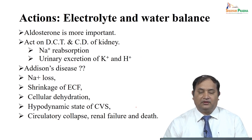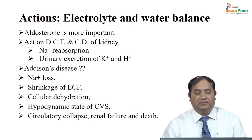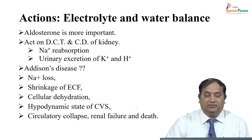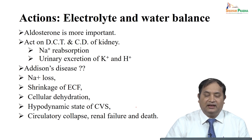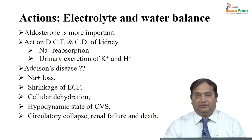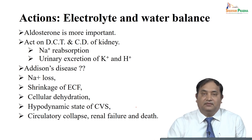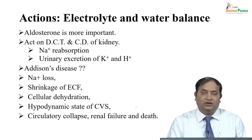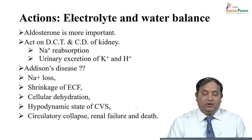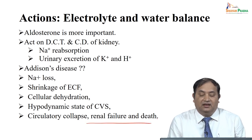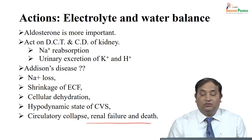In the case of mineralocorticoids, they affect electrolyte and water balance. One of the important hormones, aldosterone, acts on renal tubules — like the distal convoluted tubules or collecting duct in the kidney — reabsorbing sodium and affecting urinary excretion of potassium and hydrogen. In Addison's disease, where there is excessive sodium loss, shrinkage of extracellular fluid, or hemodynamic imbalance affecting the cardiovascular system, circulation is collapsed, ultimately causing renal failure and death. That is why we give replacement with steroid.